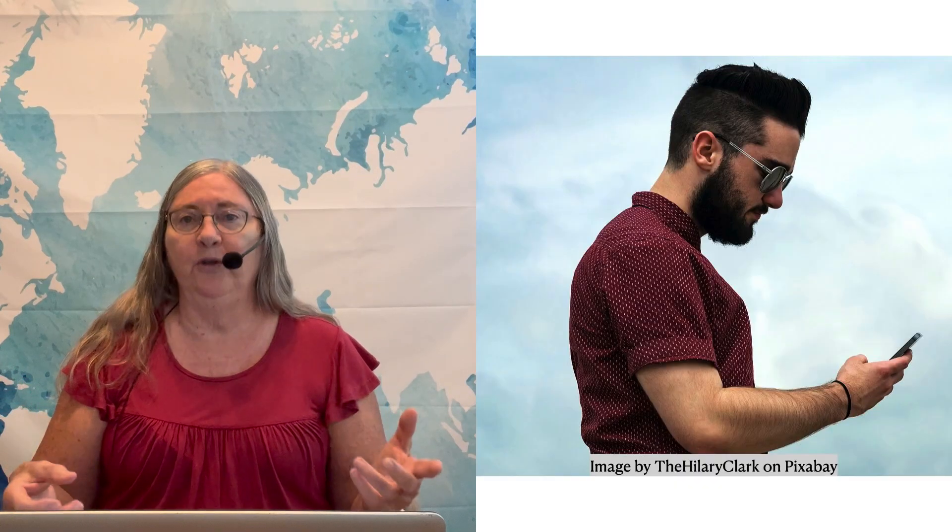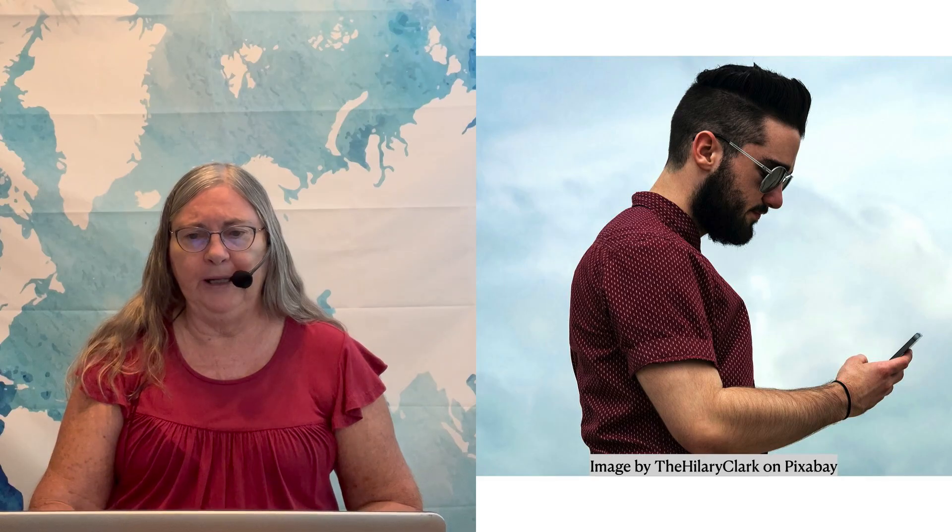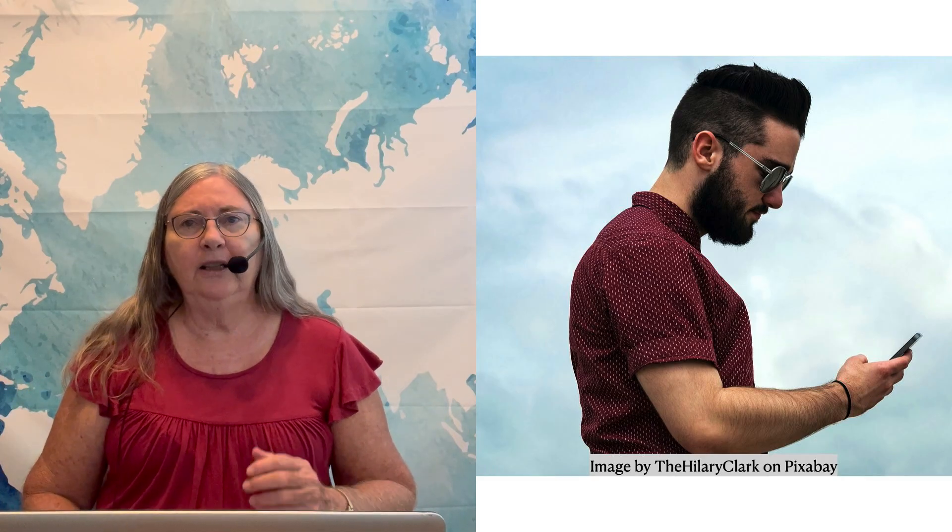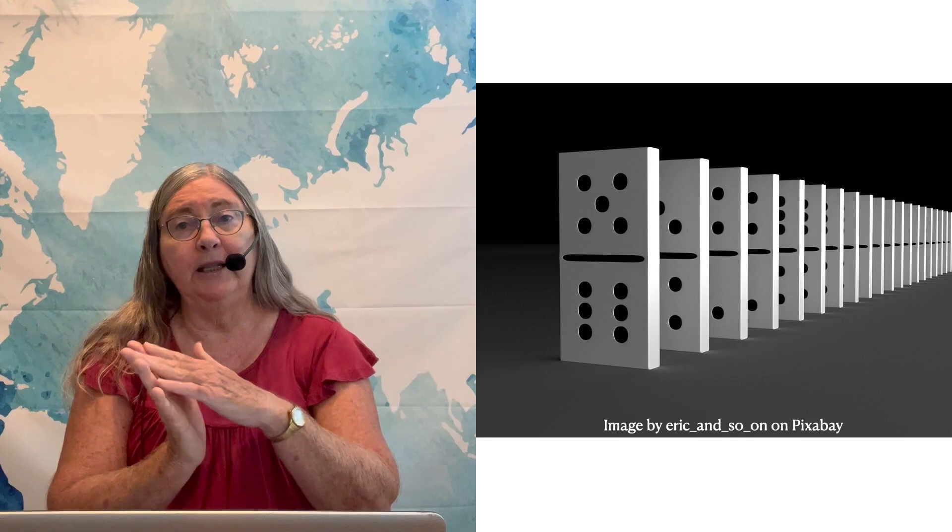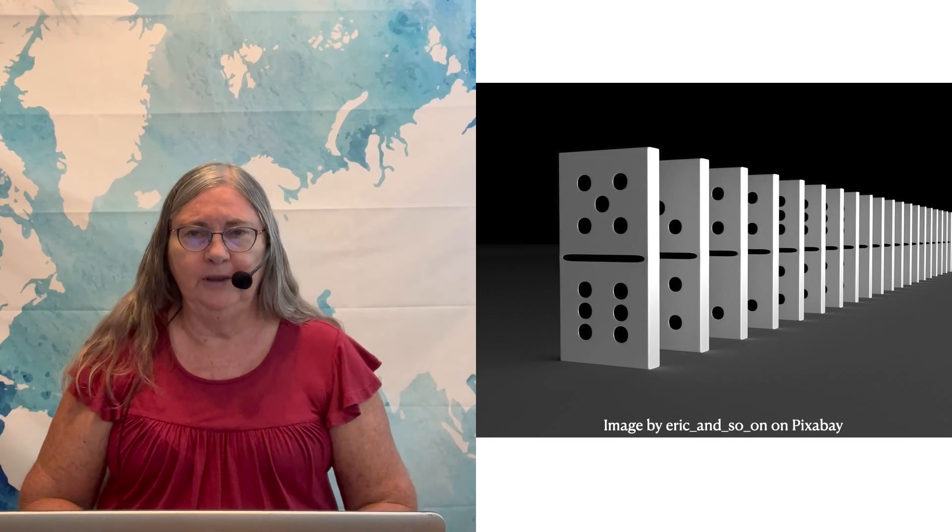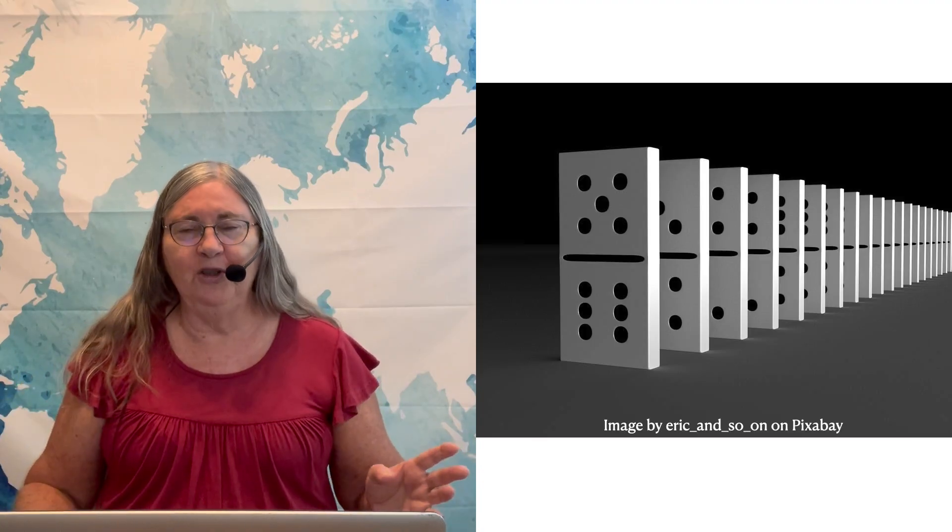And a field of any kind is kind of like a cell phone signal. You and I can be separated by a long distance, and as long as we are both connected to the signal, we can interact with each other. Another way to picture a gravitational field, it's like a line of dominoes. Now each domino interacts with only its nearest neighbors, so it's just the local interaction. But if you have a long enough line, then you can send a signal as far as you want. You just have to have enough dominoes.